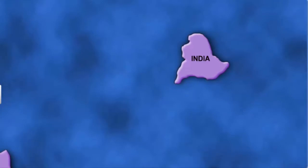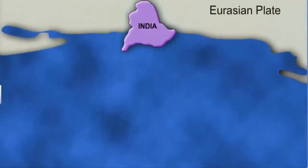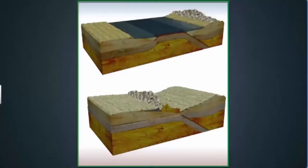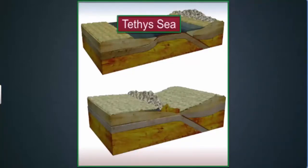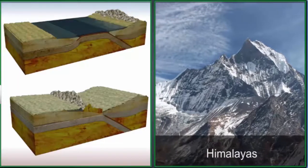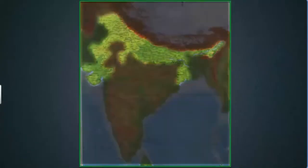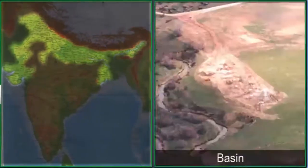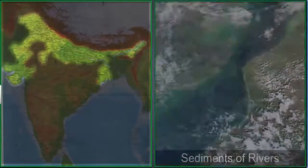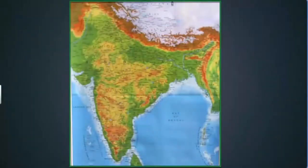The Indian Plate drifted north till it collided with the Eurasian Plate. The collision caused the sedimentary rocks in the Tethys Sea to be lifted upwards. This is how the Himalayas were formed. This uplift also created a depression in the north, which over time formed a basin filled with sediments of rivers flowing from the mountains — we now know this area as the northern plains of India, rich in fertile alluvial soil.